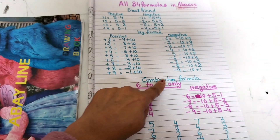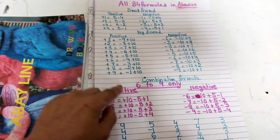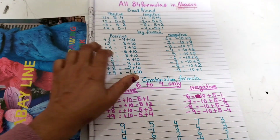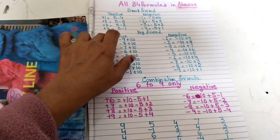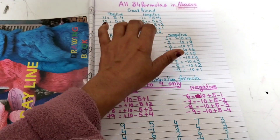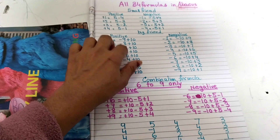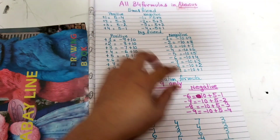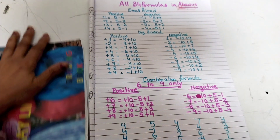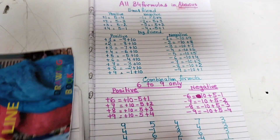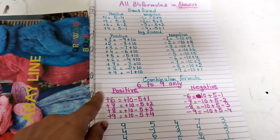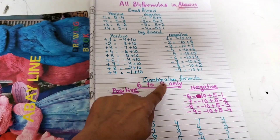Next is the combination formula. These formulas are: 4 plus 4 equals 8 — that's 9 formulas for positive and 9 for negative, totalling 18. Then combination is also 4 plus 4 equals 8. So total formulas are 34 in the abacus series. For combination, you write both positive and negative.